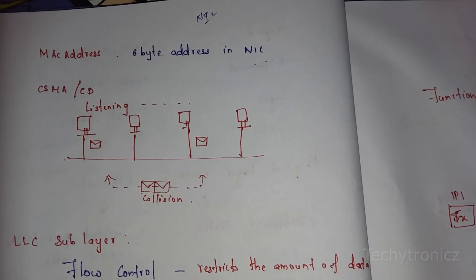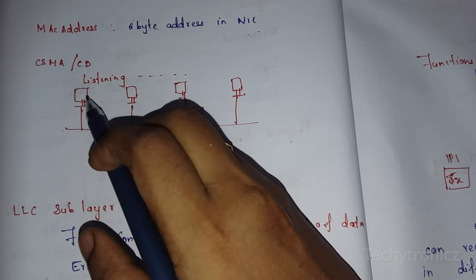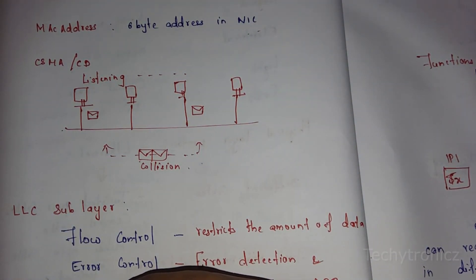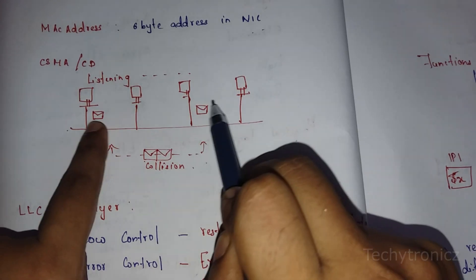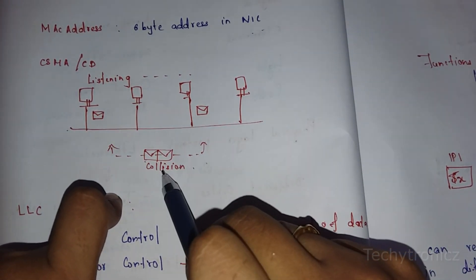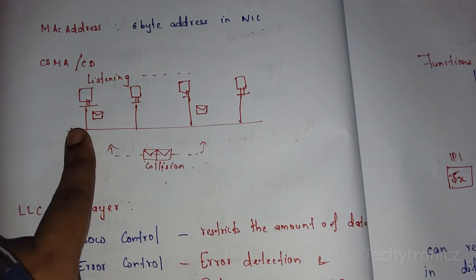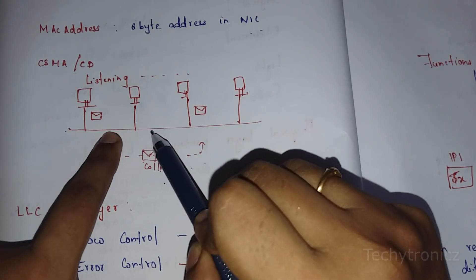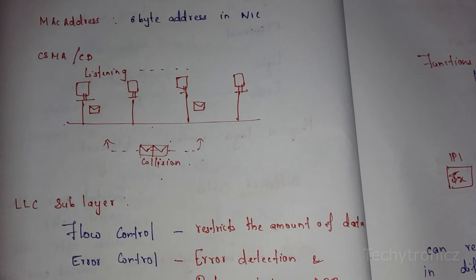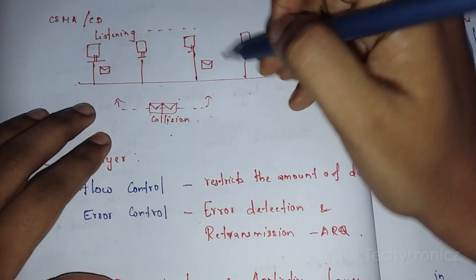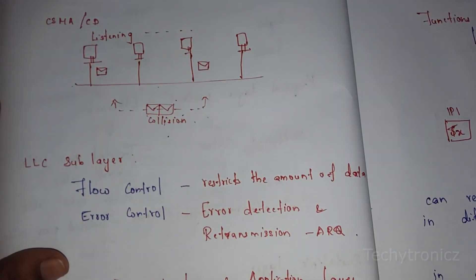CSMA/CD stands for Carrier Sense Multiple Access with Collision Detection. For example, if four computers forward messages on a channel at the same time, a collision occurs. The Carrier Sense Multiple Access method checks if the channel is free before sending the message to avoid collision. If a collision occurs at the same time, the system will wait for a random amount of time and then retransmit.